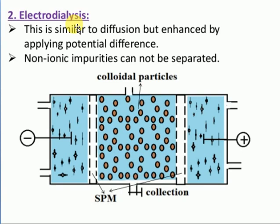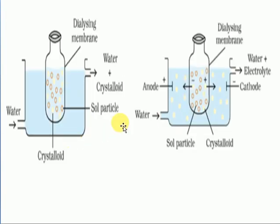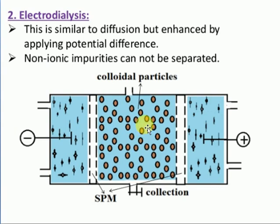To increase the speed of the normal dialysis process, we use electrodialysis. In electrodialysis, two electrodes — one positive and one negative — are placed and connected to a battery. The impurities carry positive or negative charges, and when electricity is passed, these ions move very fast from inside the cell membrane to outside. This makes the purification process much faster. This method is used for purifying blood in cases of kidney failure — that is the electrodialysis method using a semipermeable membrane.